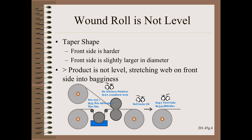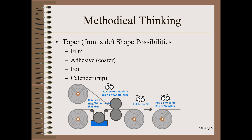We will proceed on the hunch that bagginess is caused by the product not being level enough. The challenge will be to do a series of several clever tests to reveal which element is not level enough in the product, causing differential stretching when wound. Methodical thinking will save much time and trouble. Do not shortchange this step and especially don't start testing yet or jump to conclusions. What elements could reasonably own a taper shape? We already mentioned them, but let us list them formally.